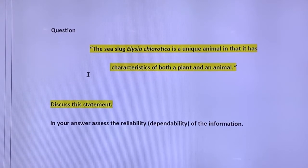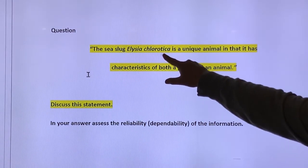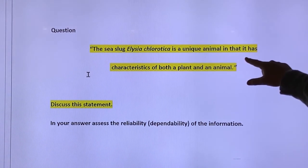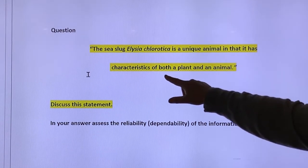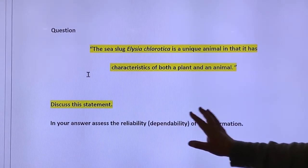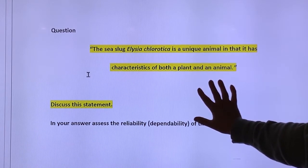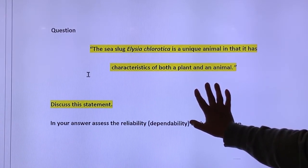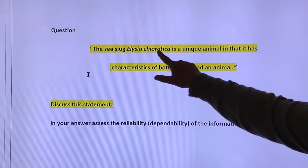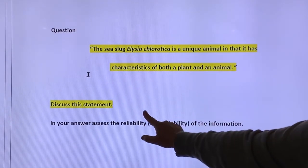Before I go and read this whole article, what I'm going to do is go and look at what I'm actually going to be asked to do. So I don't just read the whole thing and get to the end and go, I can't remember the key stuff. I've got to go back and read it again. The question I'm being asked is the sea slug, Elysia chlorotica is a unique animal in that it has characteristics of both a plant and an animal. Discuss this statement.